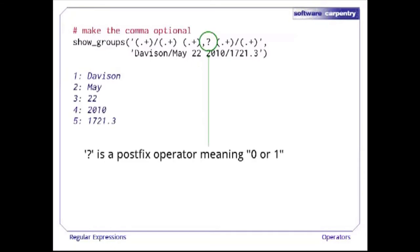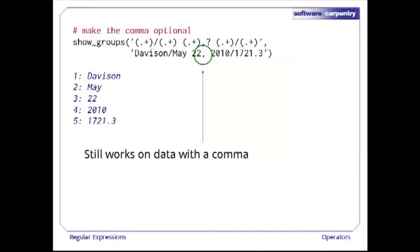Let's fix that by putting a question mark after the comma. In a regular expression, question mark is a postfix operator meaning zero or one of whatever comes before it — i.e., the pattern before the question mark is optional. So now this pattern successfully matches data without a comma, and when we test it against data with a comma, it still works.